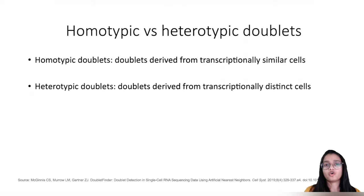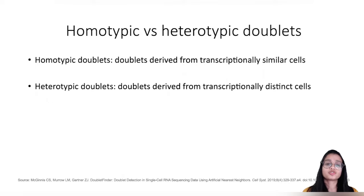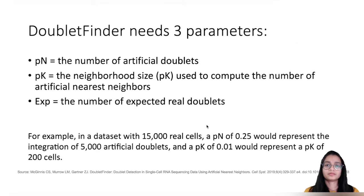There are two types of doublets: homotypic doublets and heterotypic doublets. Homotypic doublets are derived from transcriptionally similar cells, and heterotypic doublets are derived from transcriptionally distinct cells. DoubletFinder is more sensitive to heterotypic doublets and less sensitive to detecting homotypic doublets.